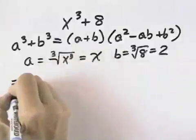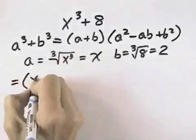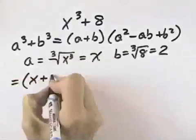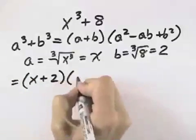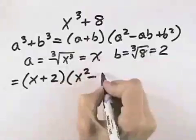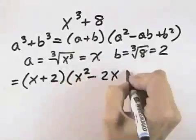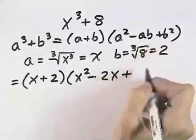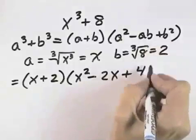So we're ready to substitute into our factored form, which means wherever there's an a, we put an x, plus wherever there's a b, we put a 2. And then we'll have a², which is x², minus x times 2, which is 2x, plus b², which is 2 times 2, or 4.